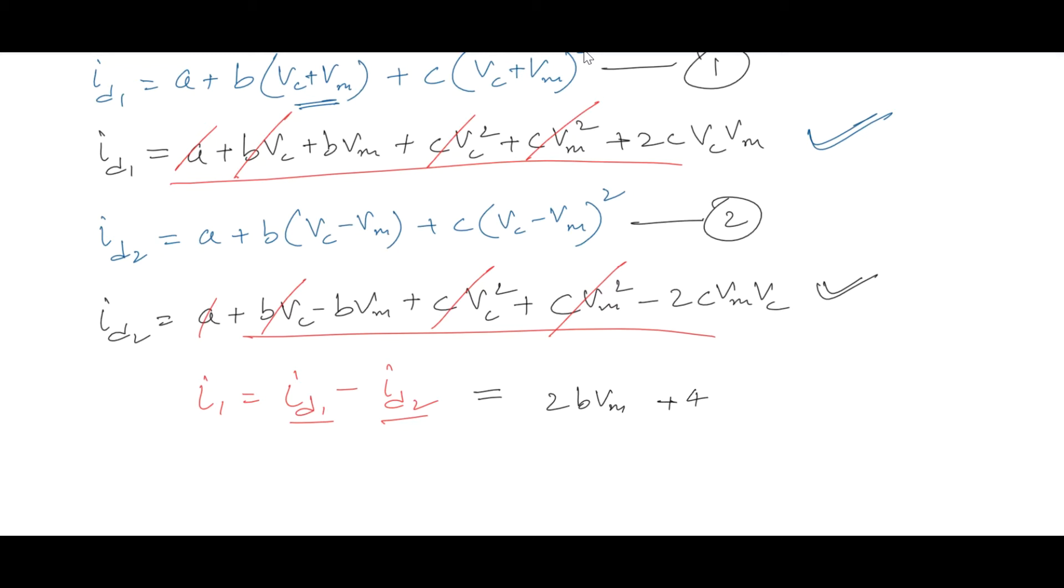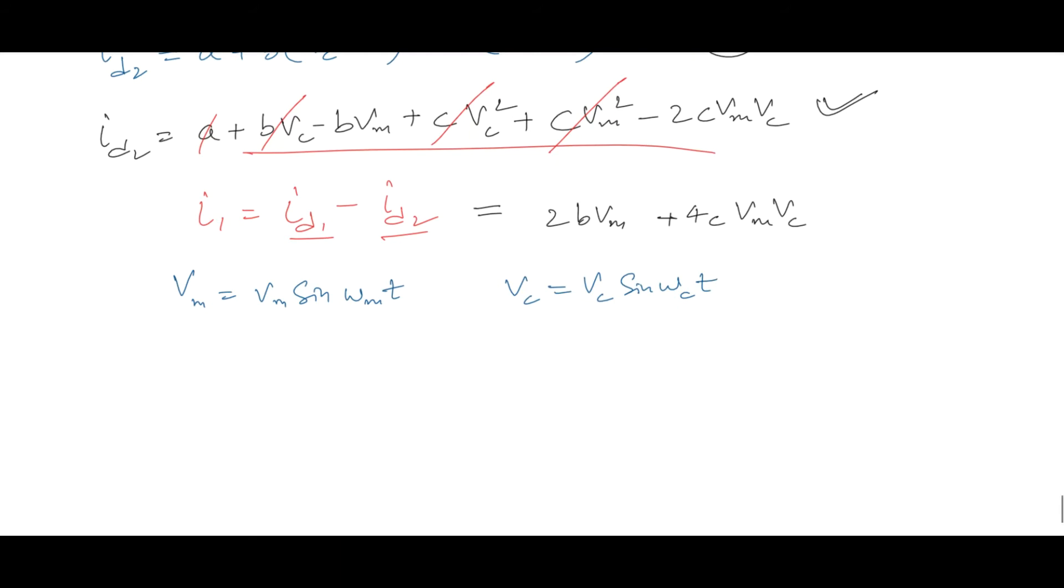Now let us consider the value of VM be equal to VM sin(ωMt), likewise for VC it will be VC sin(ωCt). Next step, let us substitute these values of VM and VC in above equation. So the value of current I1 will become equal to 2B VM sin(ωMt) plus 4C VM sin(ωMt) VC sin(ωCt).